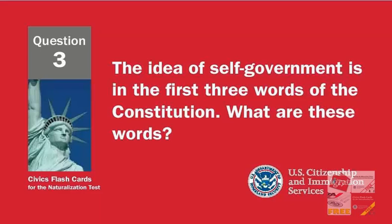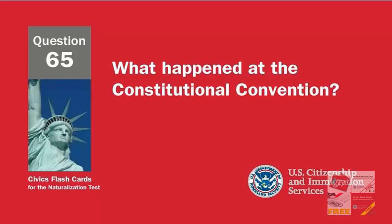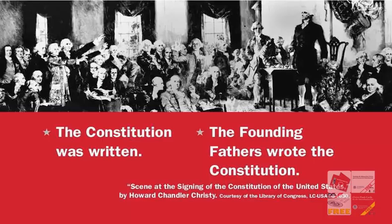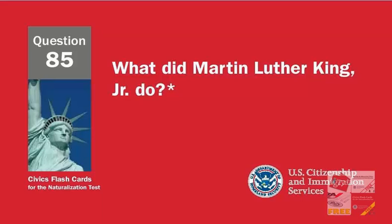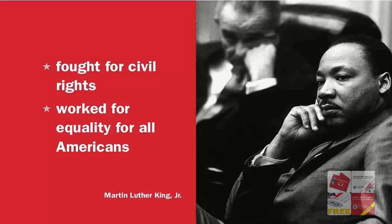The idea of self-government is in the first three words of the Constitution. What are these words? We the people. What happened at the Constitutional Convention? The Constitution was written. The Founding Fathers wrote the Constitution. What did Martin Luther King, Jr. do? Fought for civil rights. Worked for equality for all Americans.